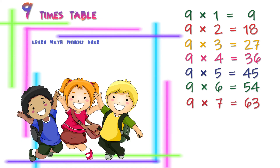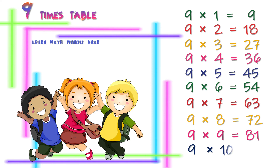9 sevens are 63, 9 eights are 72, 9 nines are 81, 9 tens are 90.